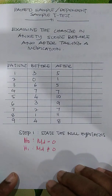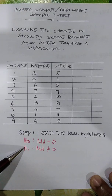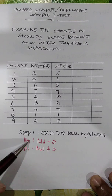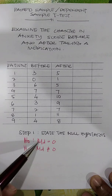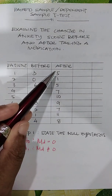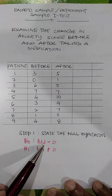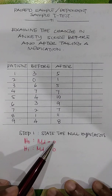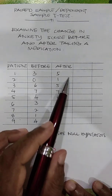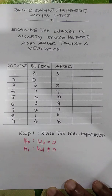Step 1: always start with writing the null hypothesis. H0 is the null hypothesis, which states there is no difference in the before and after scores — meaning the mean of the differences (M_D) is equal to 0. When the average of the differences equals 0, it means the scores before and after are the same.